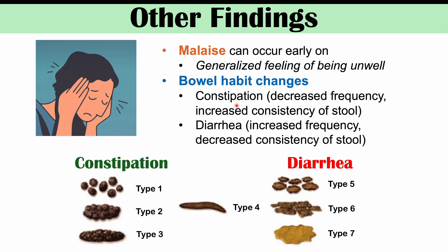Another possible early finding is nausea, which can go along with the loss of appetite and can also be an early finding of appendicitis. Then later on, vomiting may occur in later stages of appendicitis. Please check out other lessons on appendicitis for more information on other signs and symptoms, complications, and how it's diagnosed and treated.